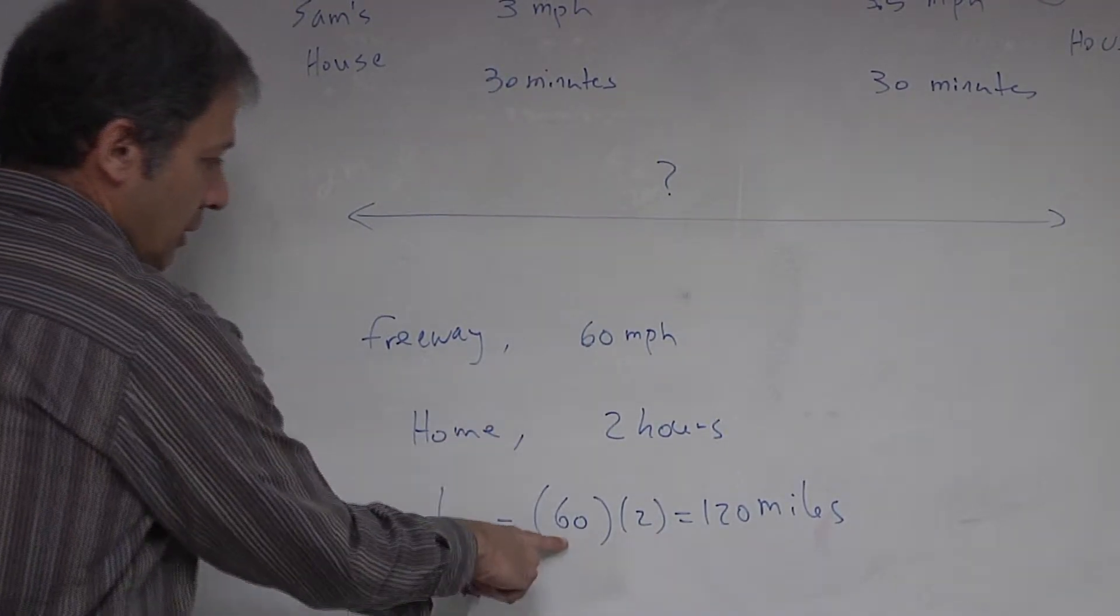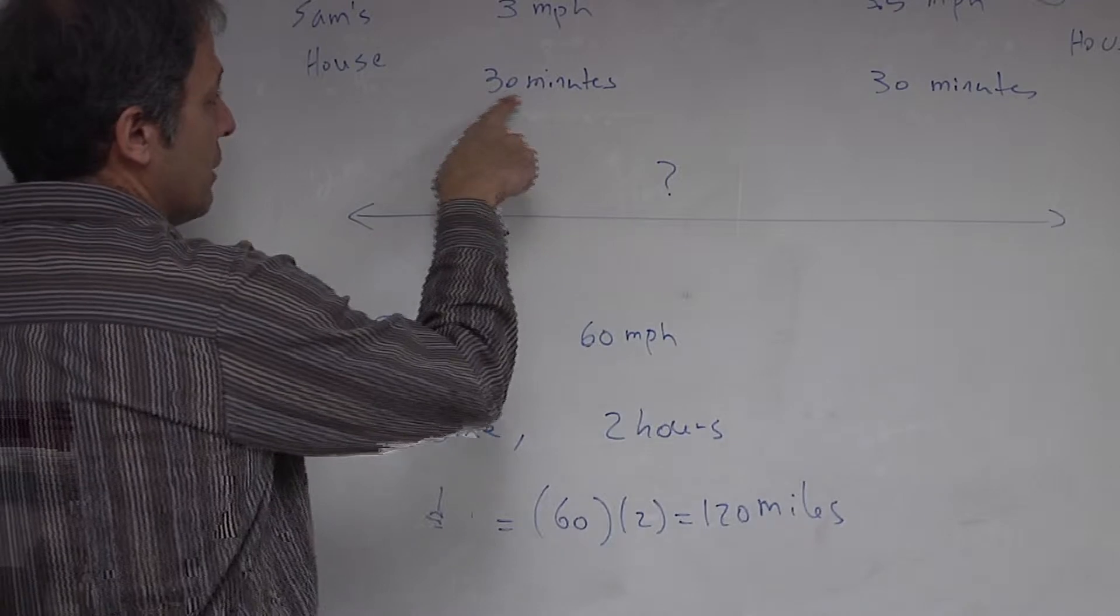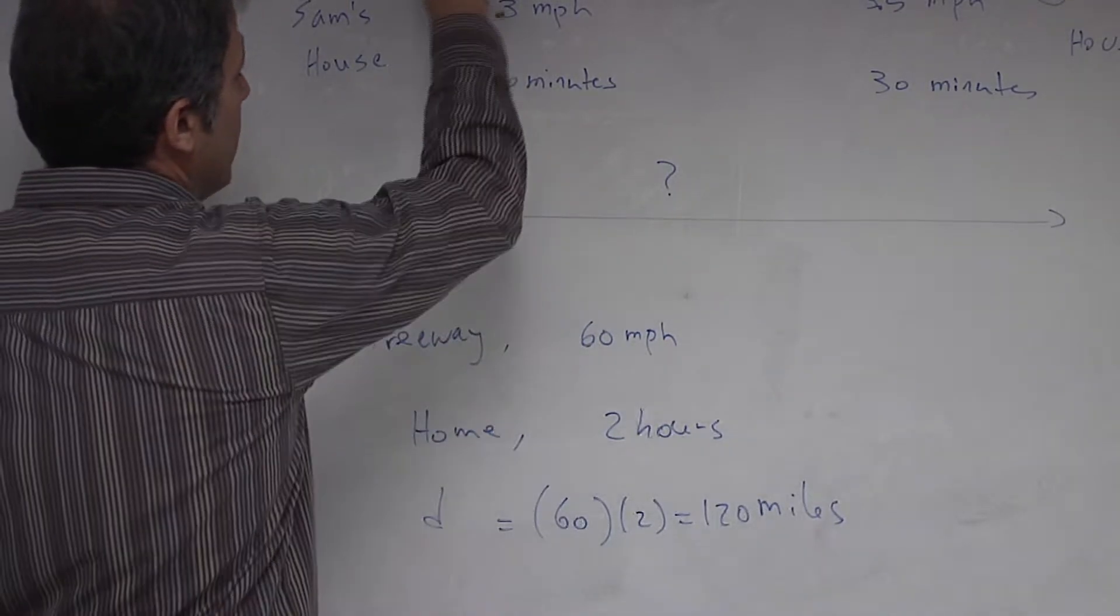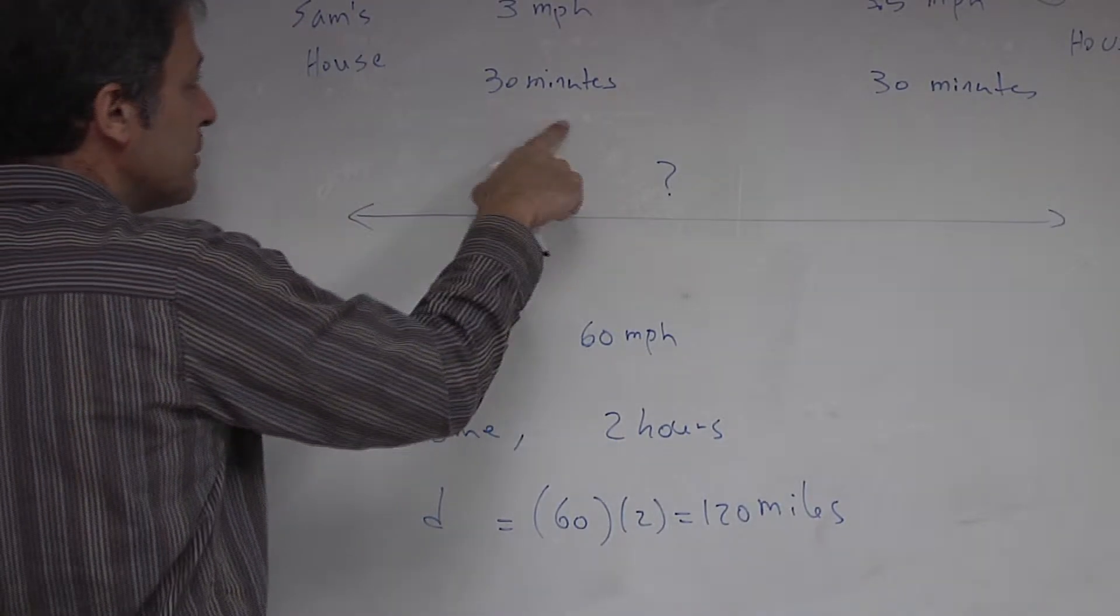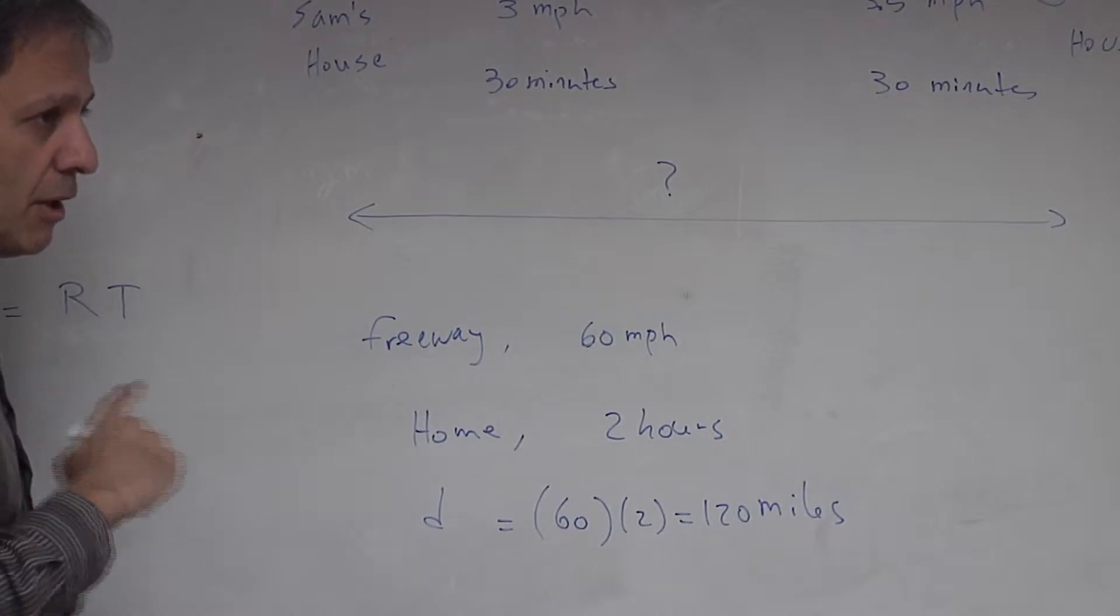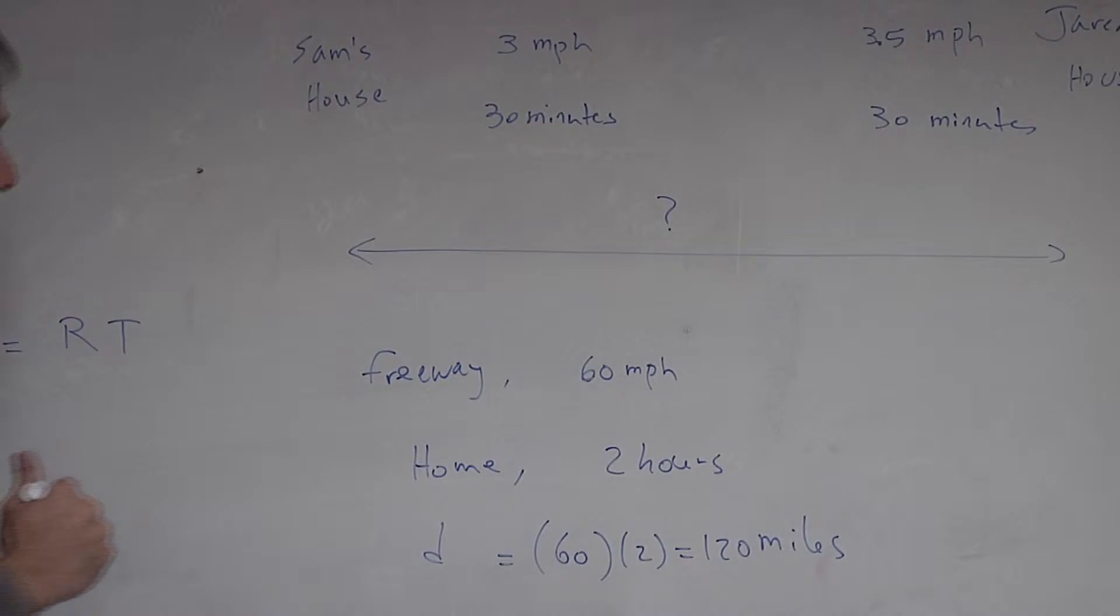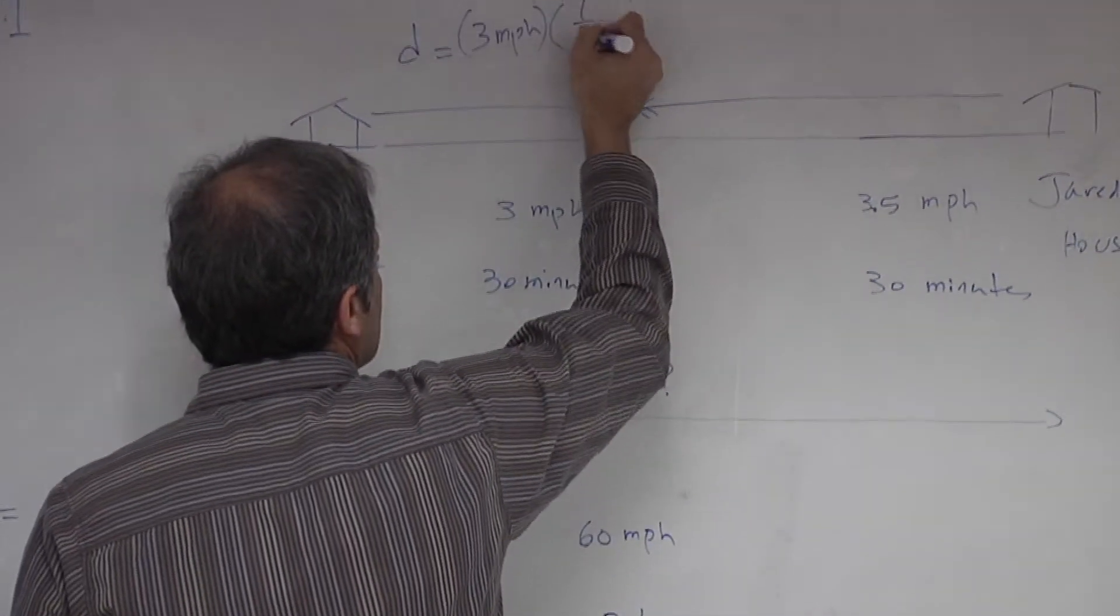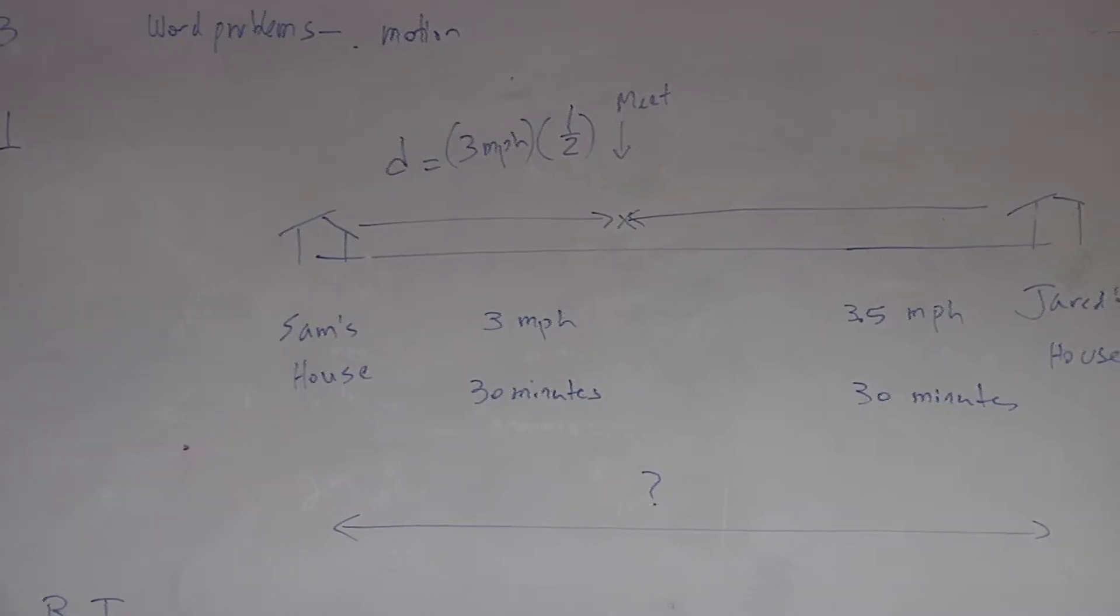So the units - 60 is miles per hour and the time is in hours. Here we have a little bit of a problem. To find the distance we have to multiply the rate which is three miles per hour times the time that should also be in hours. So how much is 30 minutes in hours? Half. Very good, so I'm going to put in half over here. The rate is in miles per hour and time has to be in units of hours in order for this to work out.